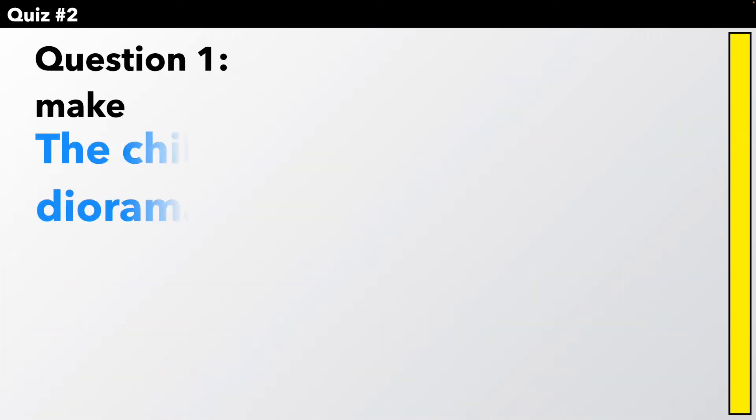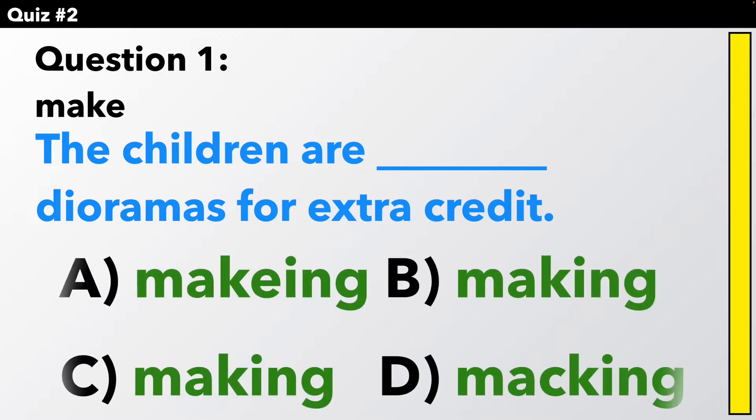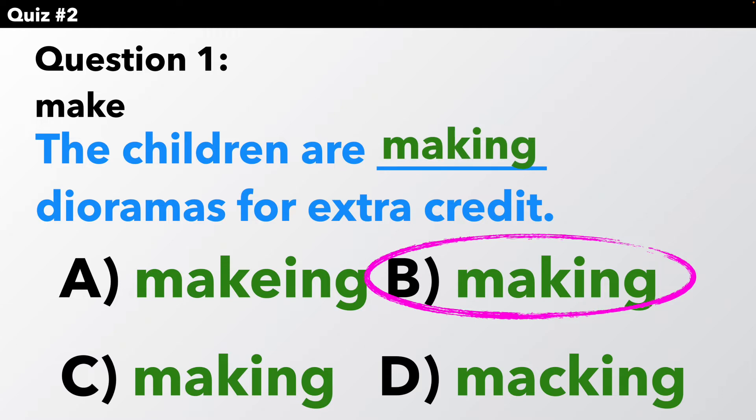Let's begin. Question 1: Make. The children are making dioramas for extra credit. Which is the correct spelling? The answer is B, M-A-K-I-N-G. We dropped the E off of make.